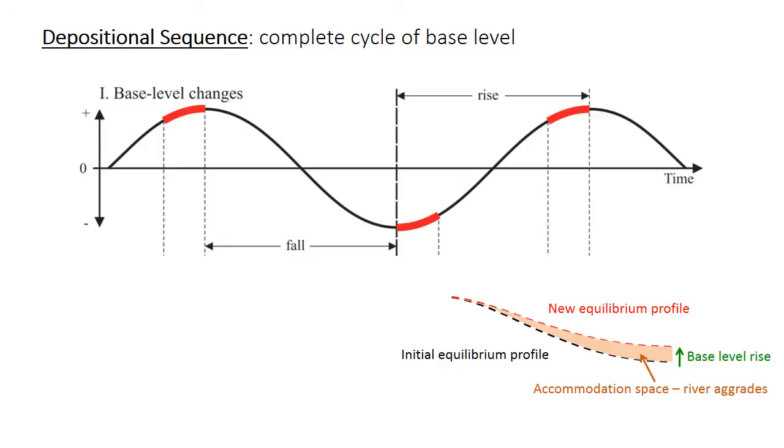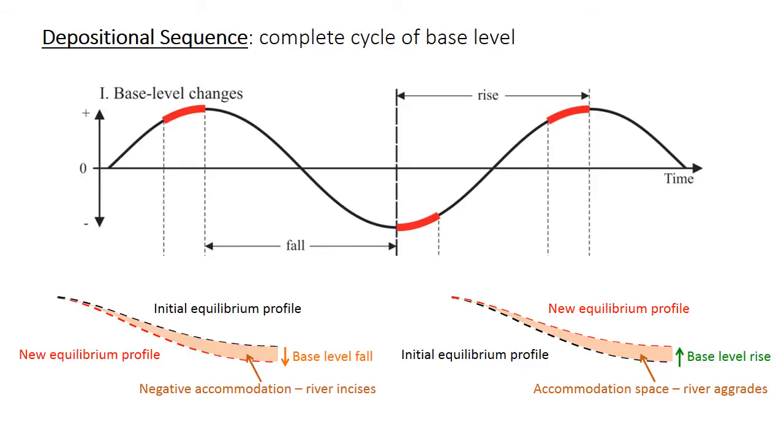Now let's consider the opposite case, where base level is falling. In this situation, the river starts at the initial equilibrium profile, the base level falls, the new equilibrium profile is now at a lower elevation than the initial profile. So there is negative accommodation space, and the river will incise or erode through the older sediments to reach that new equilibrium position.